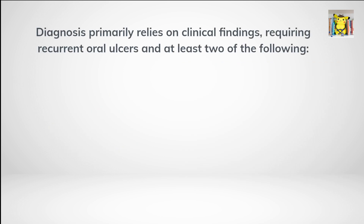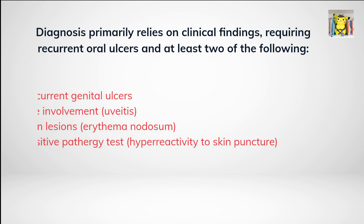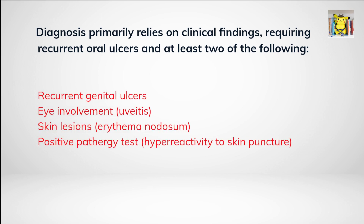Diagnosis primarily relies on clinical findings, requiring recurrent oral ulcers and at least two of the following: first, recurrent genital ulcers; second, eye involvement such as uveitis; third, skin lesions such as erythema nodosum; fourth, a positive pathergy test, which is a nonspecific hypersensitivity skin reaction induced by needle prick.